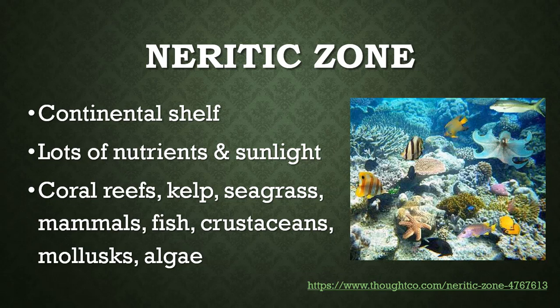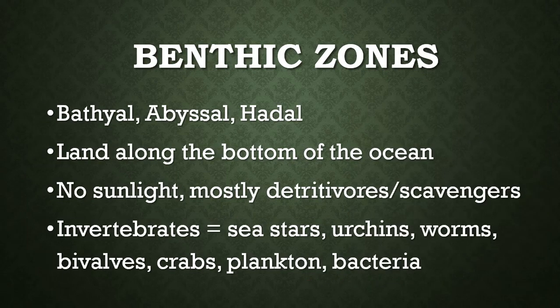You also have algae such as kelp and seagrass. There are plenty of mammals — sea lions, dolphins, sea otters. You have thousands of kinds of fish, crustaceans — those are your shelled things like crabs, lobsters, and shrimp — and mollusks, which are your clams and mussels, as well as your regular algae.